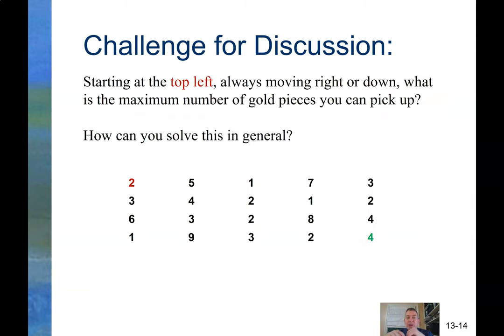Last one. We can talk about this one on Thursday. See if you have any good recursive solutions to this. Starting at that top left, at that red 2, always moving right or down, what is the maximum number of gold pieces you could pick up? So for instance, if you went this way, you'd get 2, 5, 2 and 5 is 7, 8, 15, 18, 20, 24, you'd get 28 gold pieces if you followed that path.